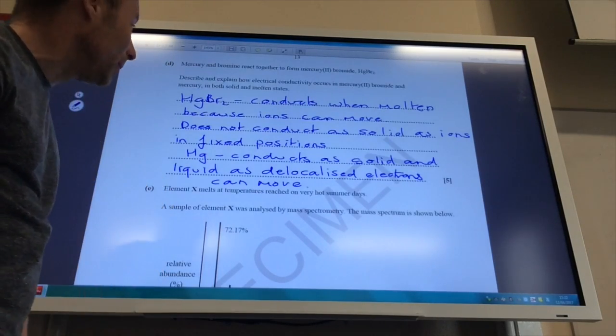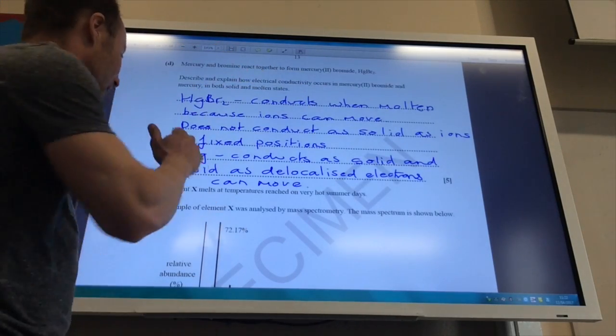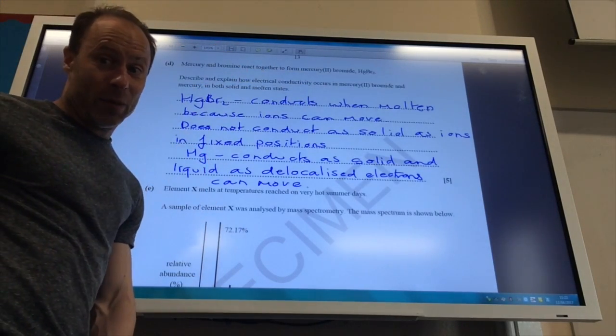It wouldn't harm you either to just put here mercury bromide ionic giant ionic lattice, mercury metallic bonded.